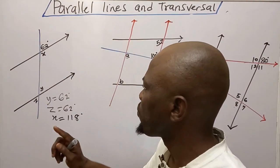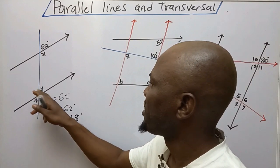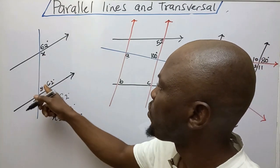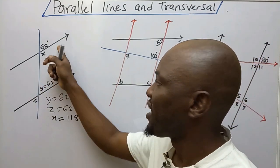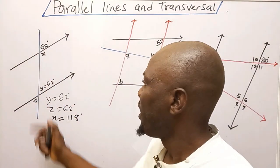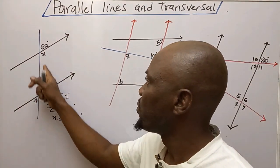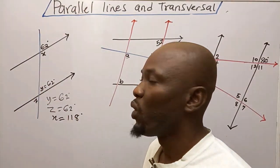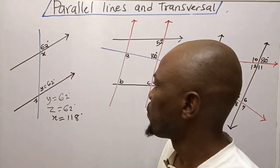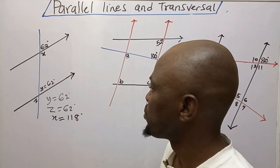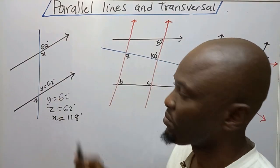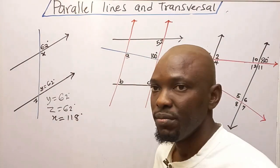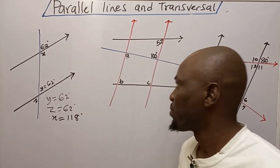Another way to get X: Y is 62 degrees here, and X and Y have a relationship because these are parallel lines with a transversal. On this side of the transversal, I have a pair of angles X and Y, so X plus Y adds up to 180 degrees — they are supplementary. So X is 180 minus 62, which gives me 118 degrees. The reason is consecutive interior angle, or co-interior angle.